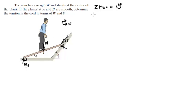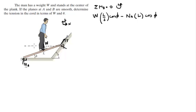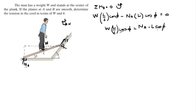The weight creates a moment of W times half of the plank times the cosine of phi — that distance from B — minus the normal at A creates a moment of the whole length of the plank times the cosine of phi, and that is equal to 0. Cleaning this up: WL/2 · cos(phi) = NA · L · cos(phi). Dividing by cos(phi) and L, you get NA = W/2.